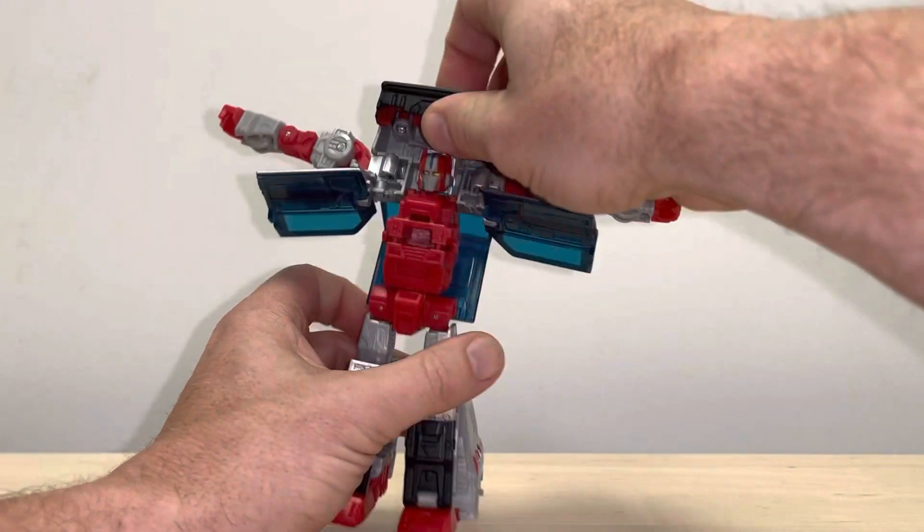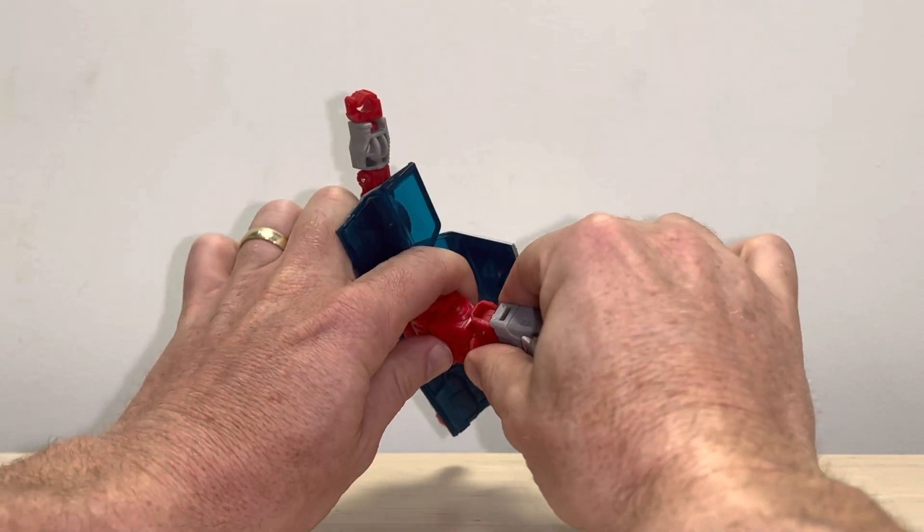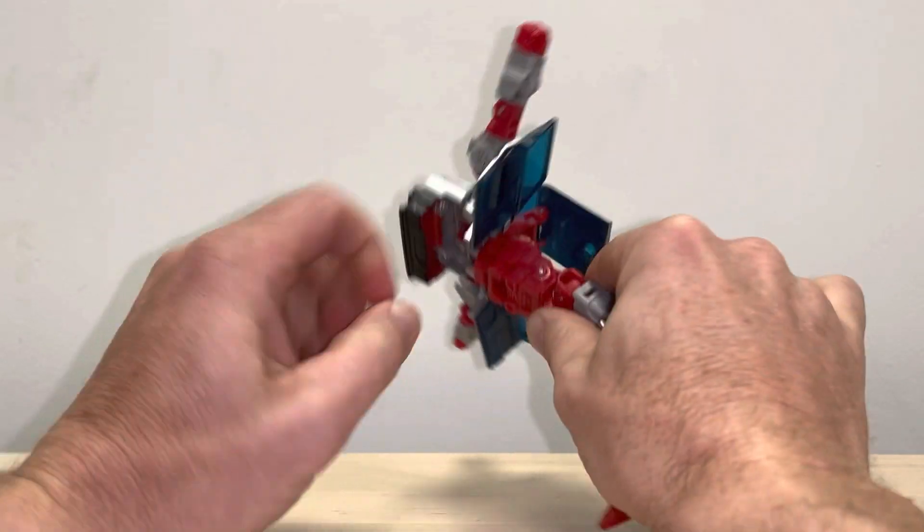Then what you're going to do, you're going to grab him by the chest, lift this all the way up and completely out of the way. Then what we're going to do while we keep that there, we're going to take hold of the waist and we're going to bend this underneath.